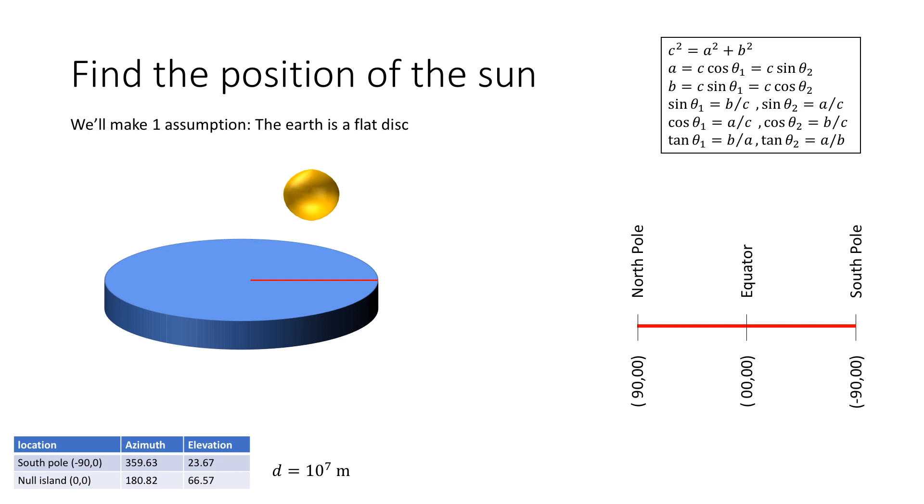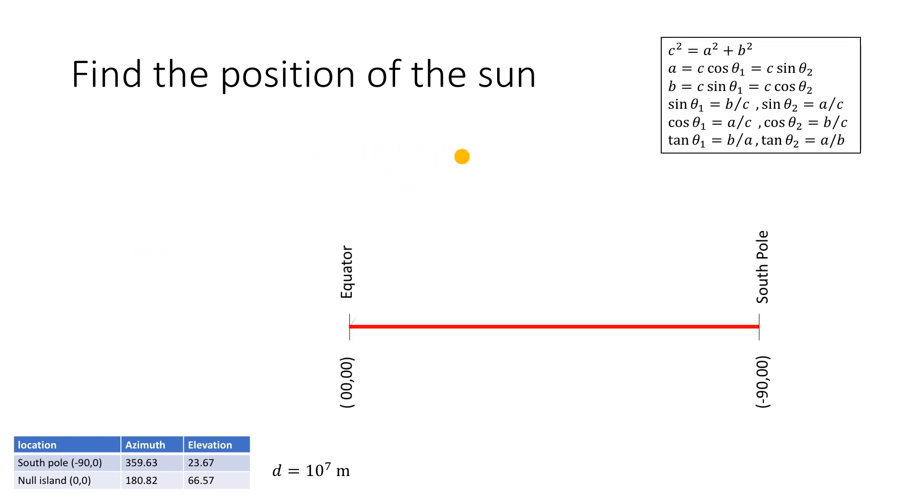Now according to the flat earth model we have a disk with the sun hovering above it. Now we can draw a line from the center of the disk to one edge and we call this the line of longitude. Now I've chosen here the line of zero longitude to be in line with the location for our observations. Now we just take the bit that we're interested in and we can connect the location of our observations with the center of the sun with a line. Now these lines are at an angle to the surface of the earth, and for the points at the equator we have an angle of 66.57 degrees and from the south pole we have an angle of 23.67 degrees. Now these two points are separated by some distance d which is 10 to the 7 meters. Now this is a value taken from Google Earth which I also believe is a trusted source within the flat earth community.